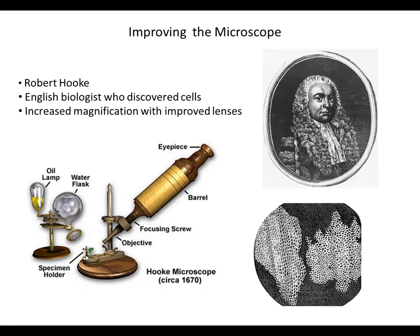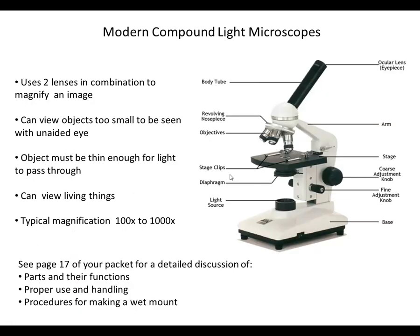This improved microscope was a big step forward and allowed for the development of cell theory. Robert Hooke is most credited with discovering and naming cells, and he's responsible for the first part of cell theory: that all living things are made of cells. Modern compound light microscopes have come a very long way, and the parts and their functions will become very familiar to you over the next week or so.